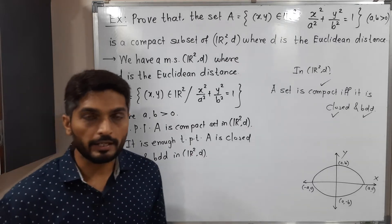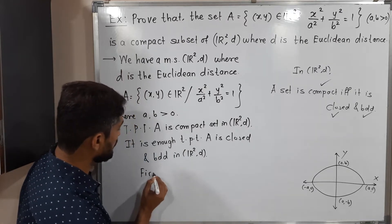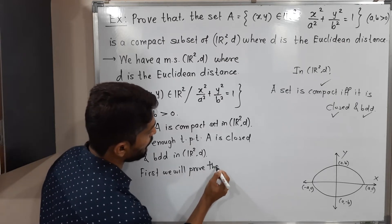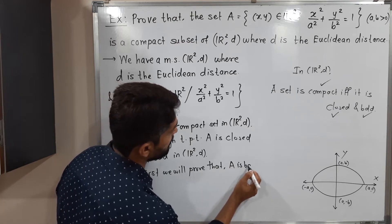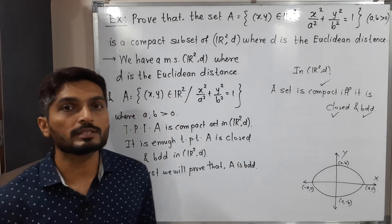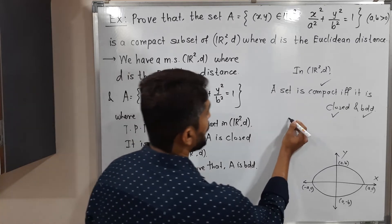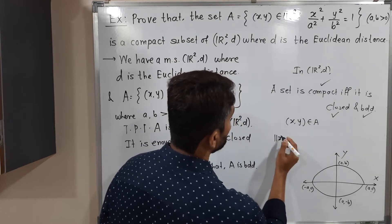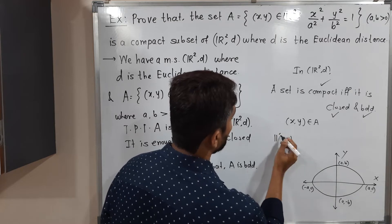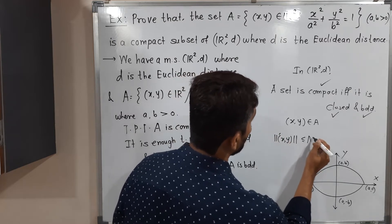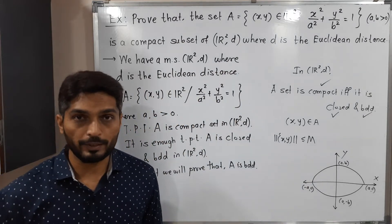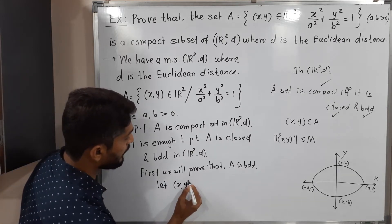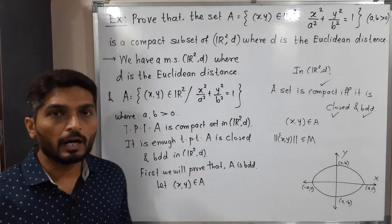We will first prove that A is bounded, then prove that it is closed. To prove A is bounded, we take any arbitrary point (x, y) from the set and prove that its norm ‖(x,y)‖ is less than or equal to some positive real number M. Let (x, y) ∈ A be an arbitrary point.